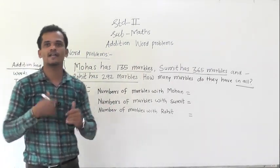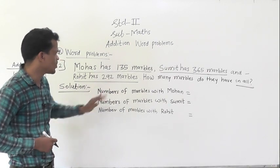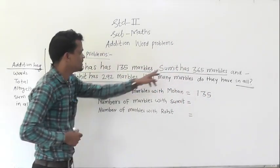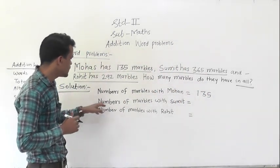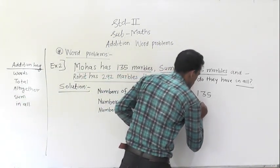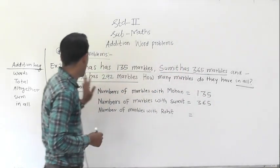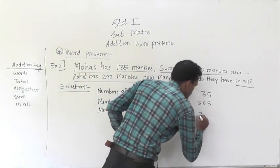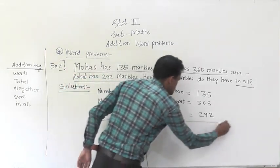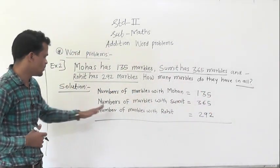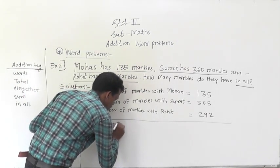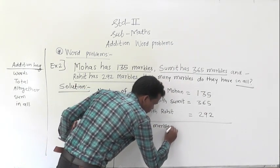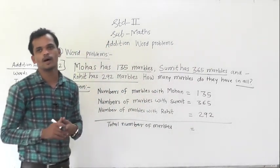First, write the things that are given in the question. Number of marbles with Mohan is equal to 135. Number of marbles with Sumit is equal to 365. Number of marbles with Rohit is equal to 292. We have to find the total number of marbles.